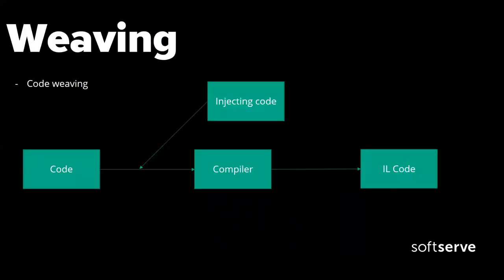In the case of weaving, there are three types. As I mentioned, we don't want to modify existing code — we want to inject code, and there are three techniques. One is code weaving, which means taking existing code and another code, mixing them into an intermediate mixed code, and then compiling it into IL code.